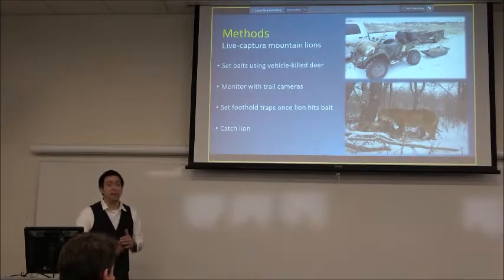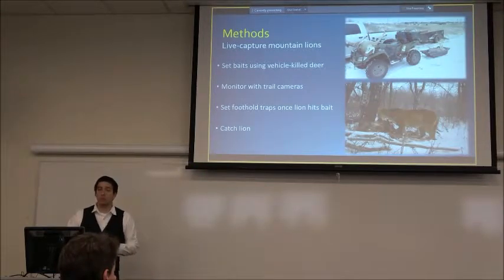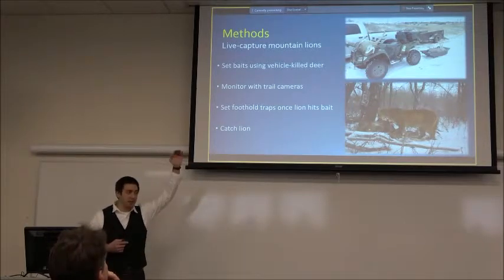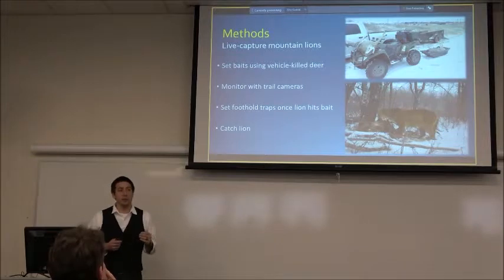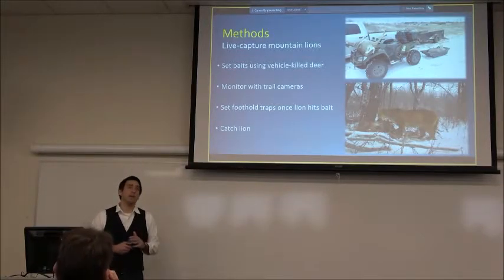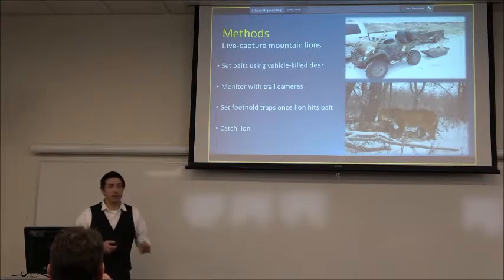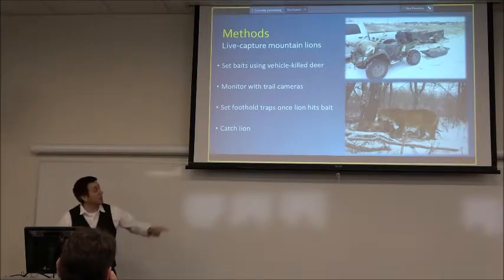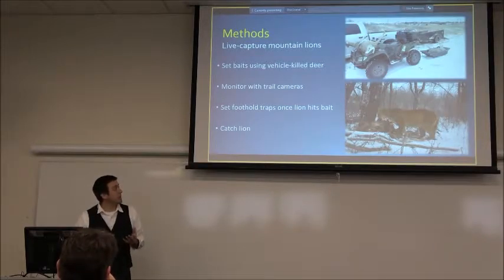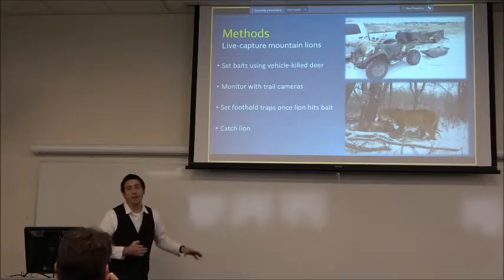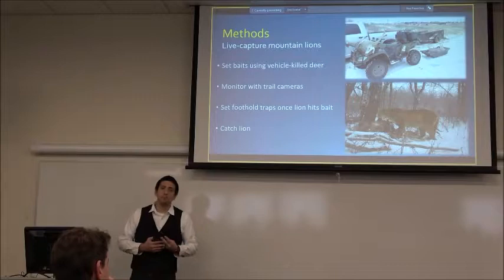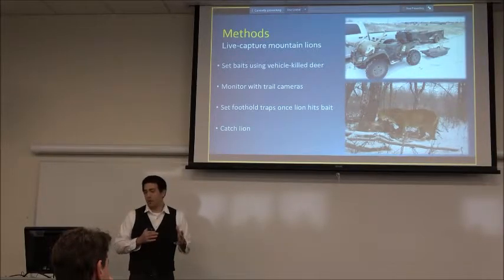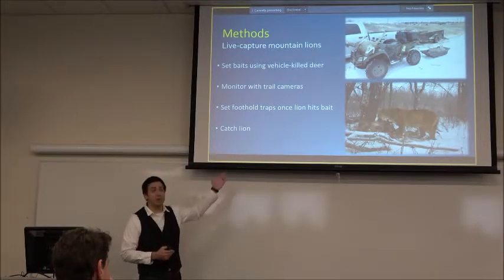To collect data, you have to catch lions and put collars on them. Most western states use hounds, but we chose foothold traps at bait sites instead. The main reason is that North Dakota's junipers stand only ten to fifteen feet tall — not like ponderosa pines — so treeing lions is much more difficult, and they often end up in caves or holes. Our approach: pick up roadkill, scout for lion sign, set baits at promising locations monitored with cameras, and check sites every three days. When a lion hit the bait, we set the trap.